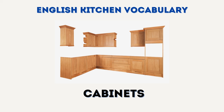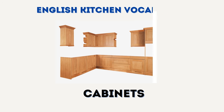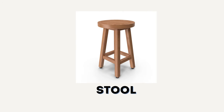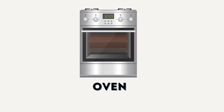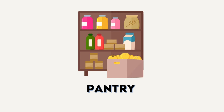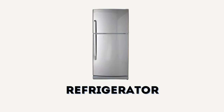English kitchen vocabulary. Cabinets. Cabinets. Stool. Stool. Oven. Oven. Pantry. Pantry. Refrigerator. Refrigerator.